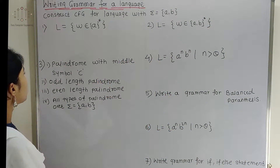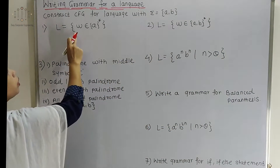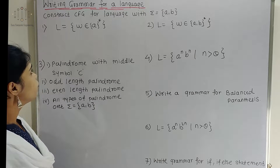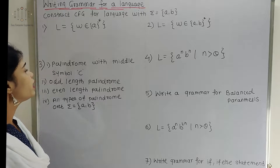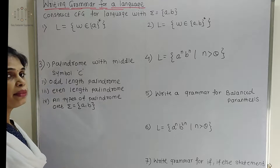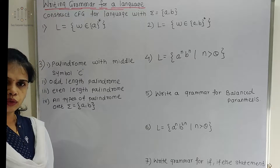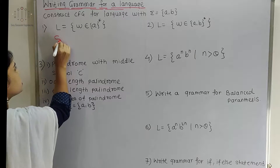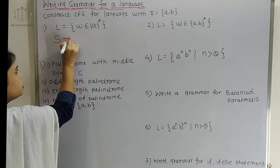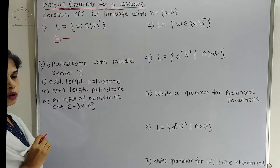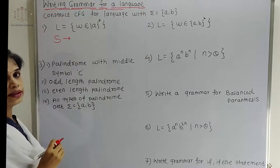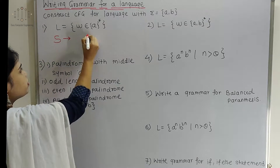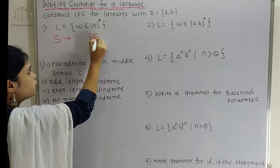This example is a language L equal to W belonging to A star, meaning every language over A star. So how we can write the grammar for this? Grammar has a starting symbol S, or you can take any variable as a starting symbol. So here S is my starting symbol, and every grammar has productions. A star means this grammar is producing epsilon, so our grammar will have epsilon as a production.